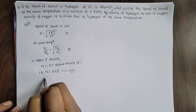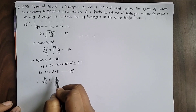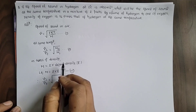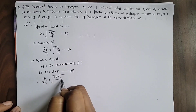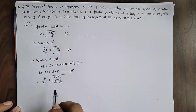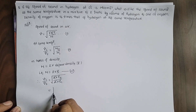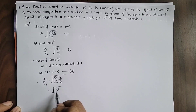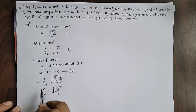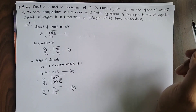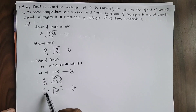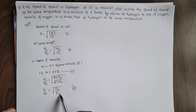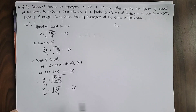Therefore, the ratio of speed of sound in two different media in terms of their density is given by V1/V2 = √(ρ2/ρ1). Since the given question uses density terms rather than mass, we have derived this relation to calculate the ratio of speed of sound in two different media in terms of their density.